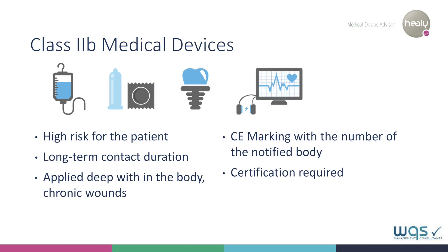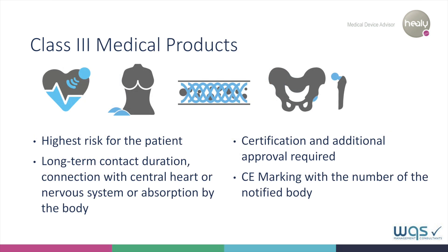Class 2B products differ from the previous ones in terms of risk, duration of use, and depth of treatment. An example of this class is the administration of infusions. Certification and CE mark correspond to Class 2A. Class 3 products have the highest risk class and the longest duration of application. They may be implanted into or absorbed by the body. Good examples of Class 3 devices are pacemakers or artificial hip joints. In addition to the certification as in Class 2A and 2B, Class 3 devices need approval as a medical device.